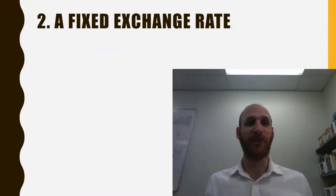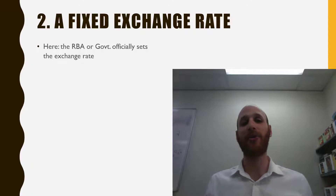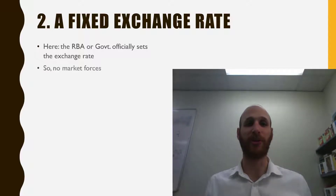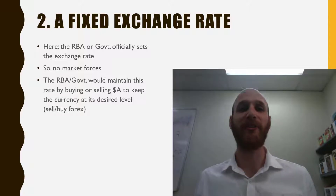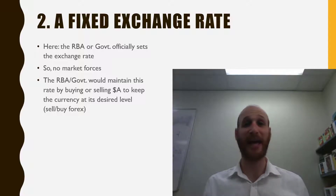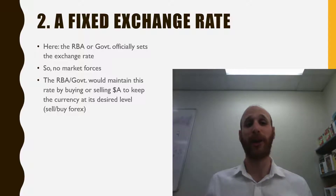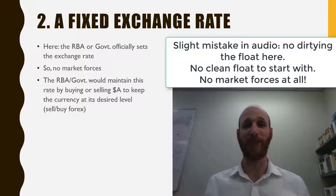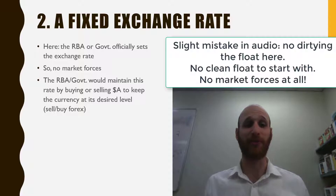With a fixed exchange rate, the RBA or the government officially sets the exchange rate — they say this is what our currency is worth, so no market forces are at play. The RBA and the government maintain this level by buying or selling the Australian dollar to keep it at its desired level: buying Australian dollars, selling foreign exchange. They're trying to dirty the float to keep it at a certain level.